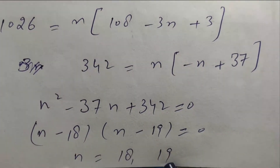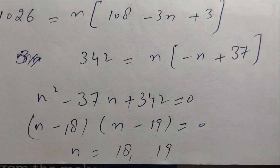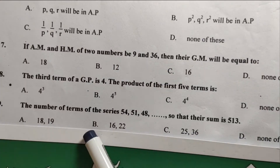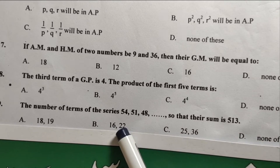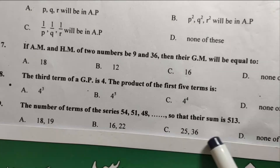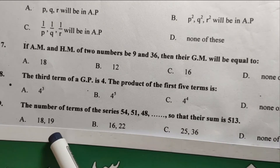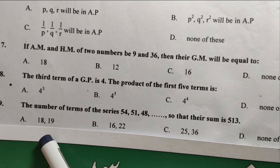Solving N² minus 37N plus 342 equals zero, the two values of N are eighteen and nineteen. So the number of terms is eighteen or nineteen. Option A is correct. The number of terms of the series 54, 51, 48, and so on, such that the sum equals 513, gives option A as the correct answer.